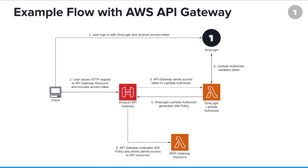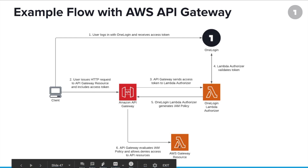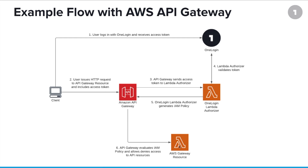As this diagram shows, the client has obtained an access token from OneLogin using one of the standard flows and is then submitting it via the API gateway to the Amazon API resource. In this video, we're using a sample application from Amazon called the PetStore application.